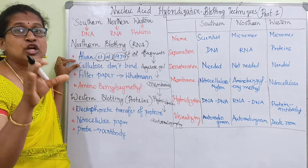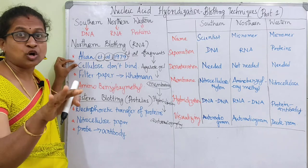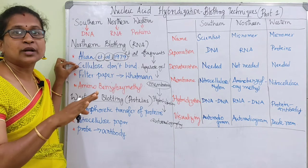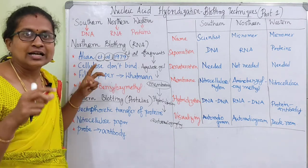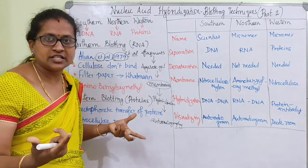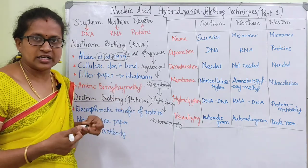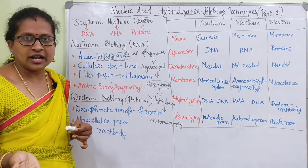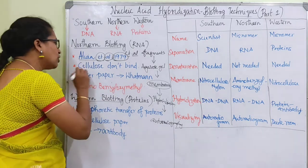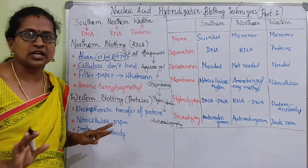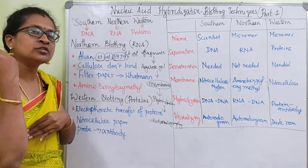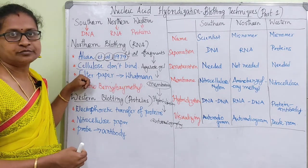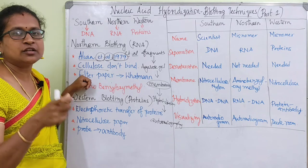In southern blotting we use nitrocellulose for hybridization, but RNA will not bind to nitrocellulose membrane because of its affinity and sensitivity issues - under positive-negative conditions we cannot bind RNA to nitrocellulose. So we search for a second option: special filter papers that allow RNA to bind.